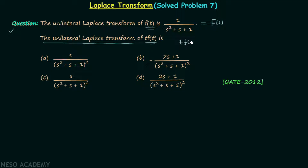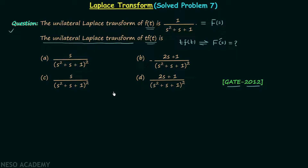We are required to calculate the unilateral Laplace transform of t·f(t), represented by F'(s). There are four options given in the question and we need to find the correct one. This question is taken from the GATE 2012 exam, and it is a fairly easy question.